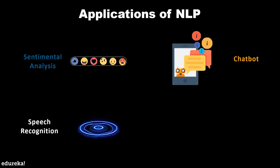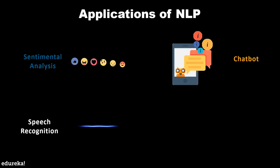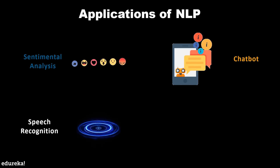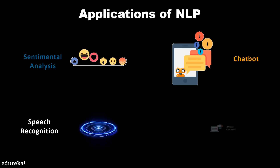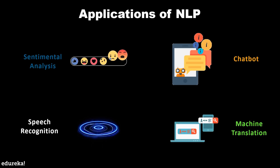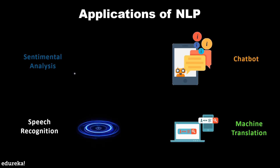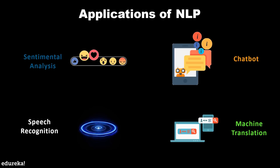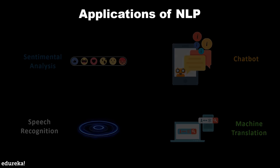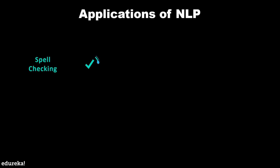We also have speech recognition, and here we are talking about voice assistants like Siri, Google Assistant, and Cortana — the process behind all of this is because of natural language processing. Machine translation is also another use case of NLP, and the most common example is Google Translate, which uses NLP to translate data from one language to another in real time.